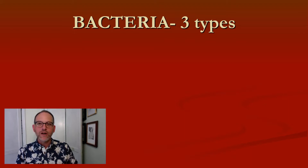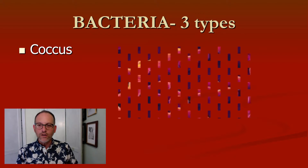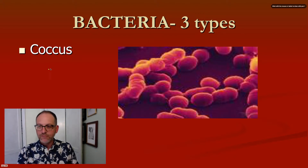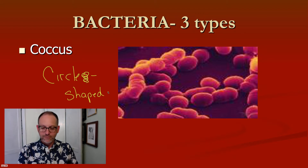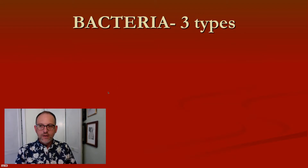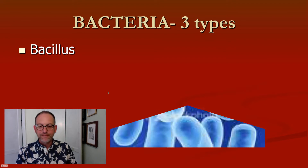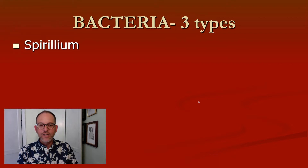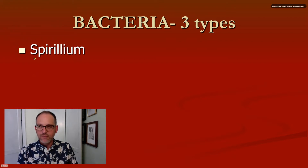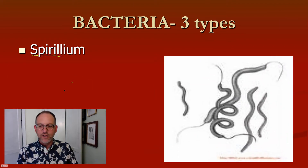Moving on to bacteria — again we're talking about prokaryotes. Bacteria are typically found in three different forms: coccus, which are circle-shaped; bacillus, which are rod-shaped bacteria; and lastly spirillum — look at that name: 'spiri-' — their shape is spirals, exactly.